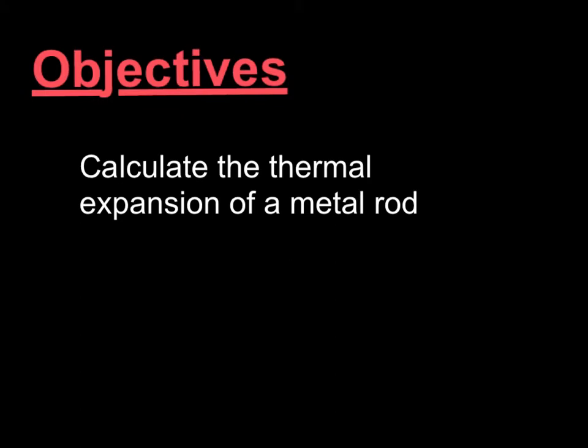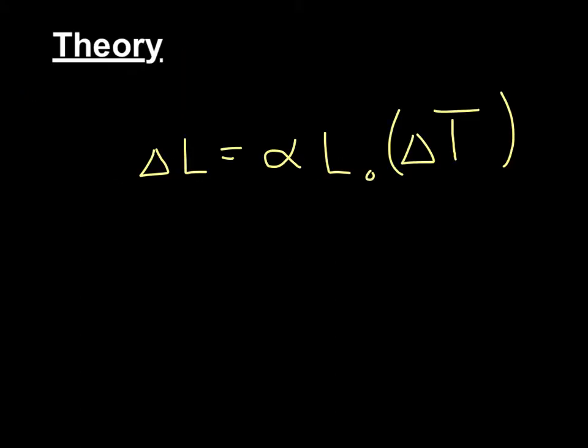Your objective here is to calculate the thermal expansion of a metal rod. The goal of this lab is to find alpha, the coefficient of thermal expansion. To do this, you're going to measure the original length of a rod. You're going to heat it up to find the change in temperature. It starts at room temperature, so T initial equals room temp.